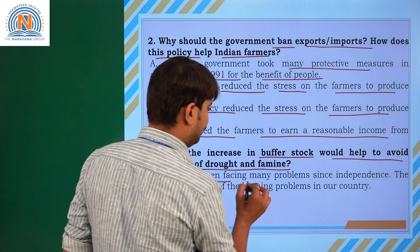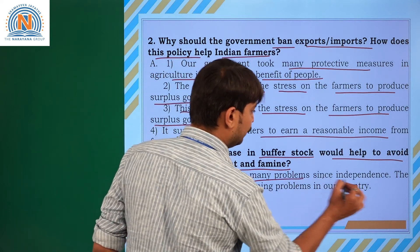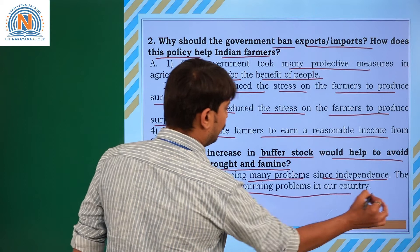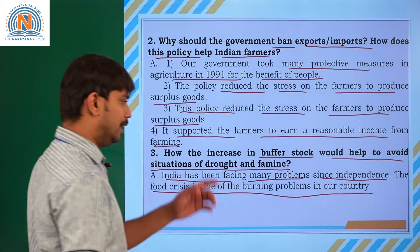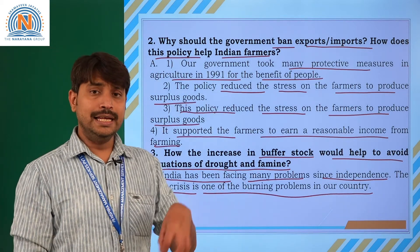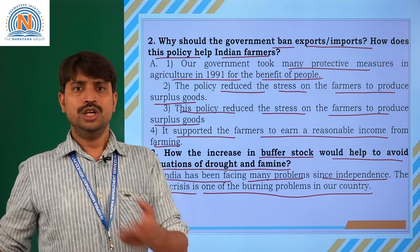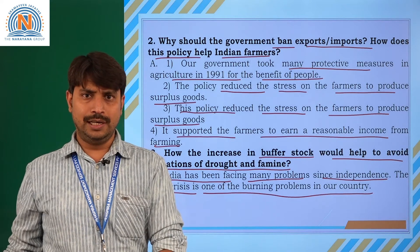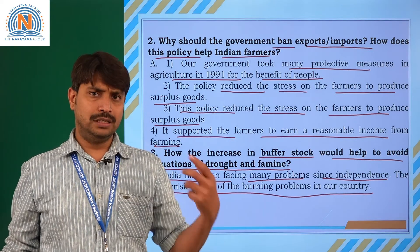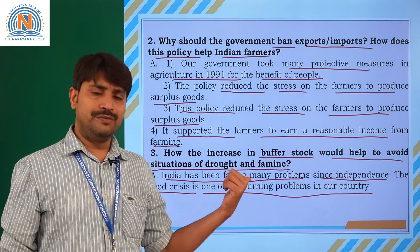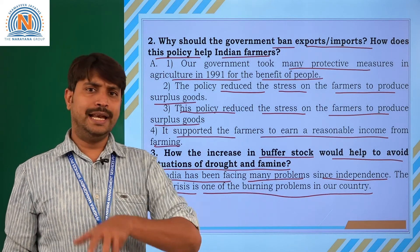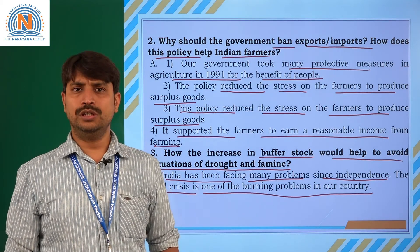India has been facing many problems since independence, and the food crisis is one of the burning problems in our country. That is the reason the buffer stock was introduced to increase productivity. By storing food grains, during any type of famine, flood, or drought, these food grains are distributed to the public.